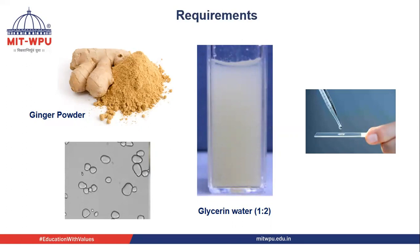Now, to determine the diameter of starch grains, we take ginger powder. Diluting it and observing under the microscope reveals ginger starch grains. We can also make a suspension and add iodine — the starch grains will turn blue color, making them easy to identify. Take a pinch of ginger powder in a test tube, add glycerin and water in a 1:2 ratio, make a suspension, then place a drop on a slide, spread it, and observe under the microscope.